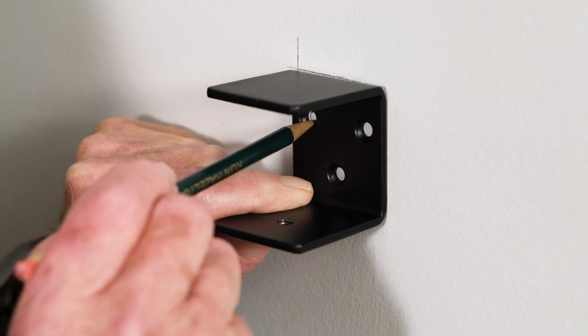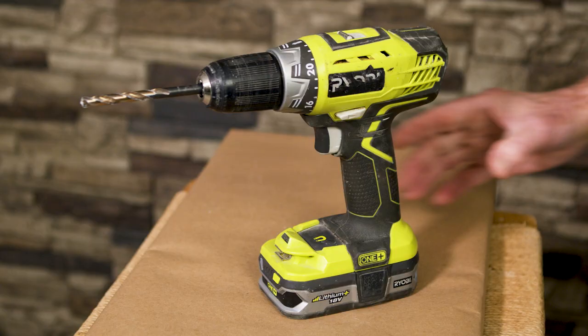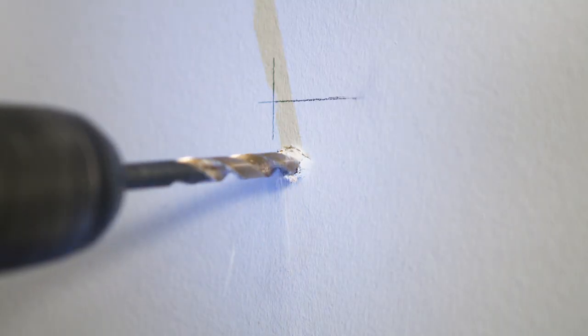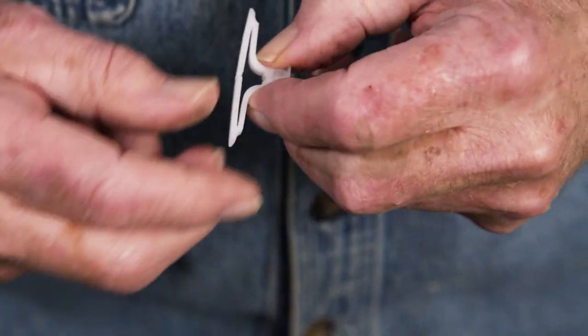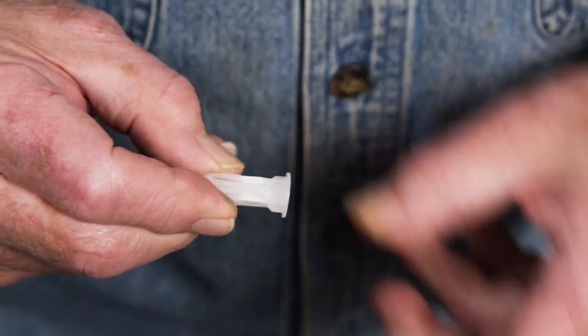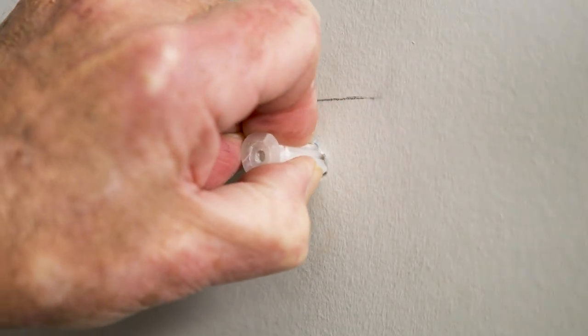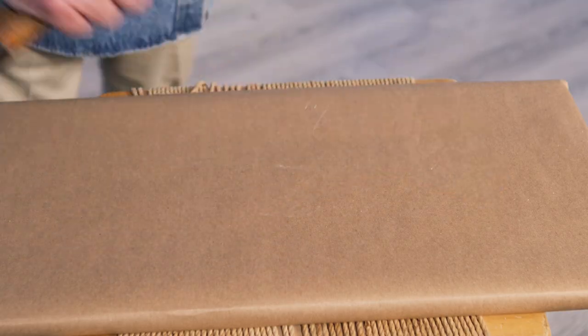Once again, I mark the location for the first screw. This time, though, I bore a much larger hole to receive the wall toggle. I fold the wings of the toggle together, insert the anchor into the hole, and tap it in place.